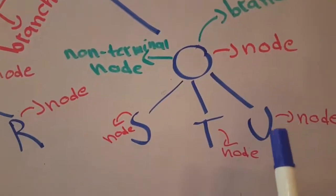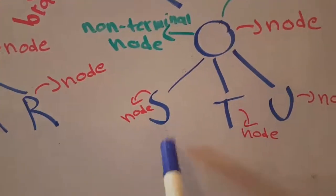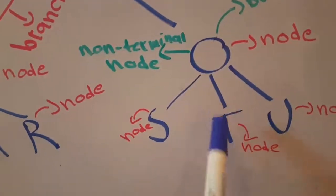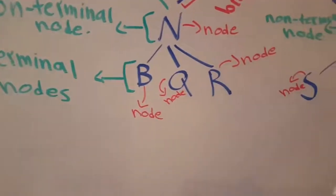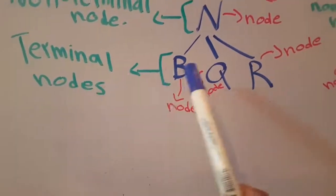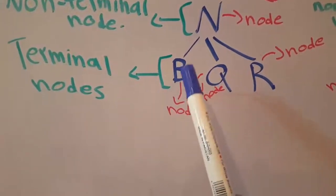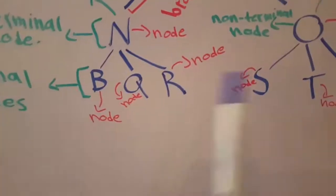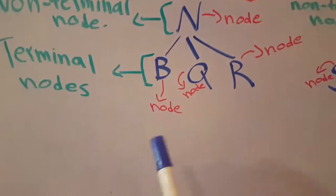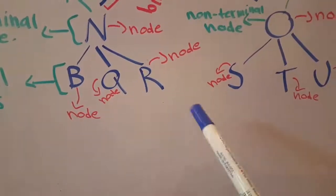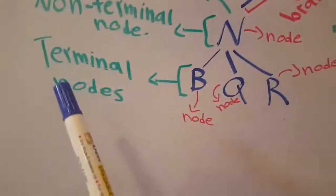Now let me discuss the letters U, T, and S. I could call them nodes because there is a branch going above them. Now here is something new: we could call these terminal nodes. Not only P, but P, Q, R, S, T, and U — all of these letters we can call terminal nodes. We call them terminal nodes because they come at the end of the tree and there are no more branches going under them.